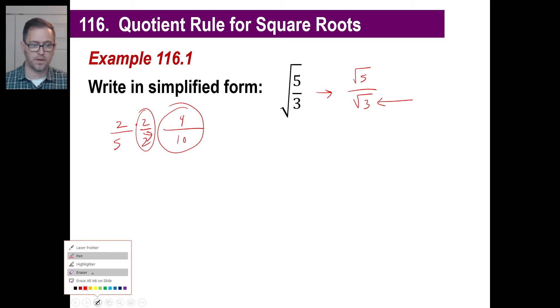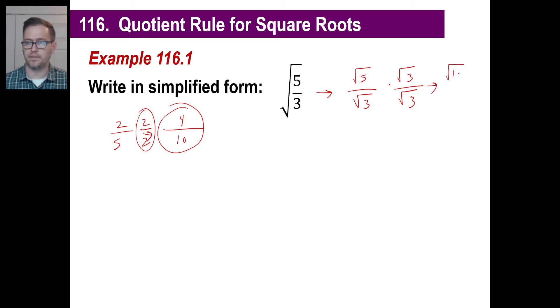So we're going to do exactly the same thing here. We're going to take the square root of 5 over the square root of 3, and we're going to multiply the top and the bottom by the square root of 3. And what we have up here, of course, is the square root of 15. And we have here the square root of 3 times the square root of 3 is just 3. And 3 is a rational number because you can write 3 as a fraction, 3 over 1.